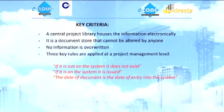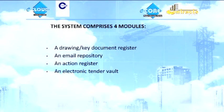Key rules that are applied at a project management level are: if it's not on the system, it doesn't exist, so never refer to it. If it is on the system, it's issued and you've read it. And the date of the document is the date it enters the system, no other date. The system comprises four modules: a drawing and key document register, an email repository, an action register, and an electronic tender vault. So, those are the four basic modules.